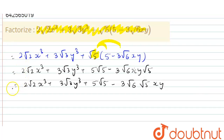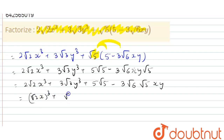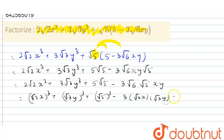Looking at this, you can clearly see that this can be written as (√2x)³ + (√3y)³ + (√5)³ - 3·√2x·√3y·√5.